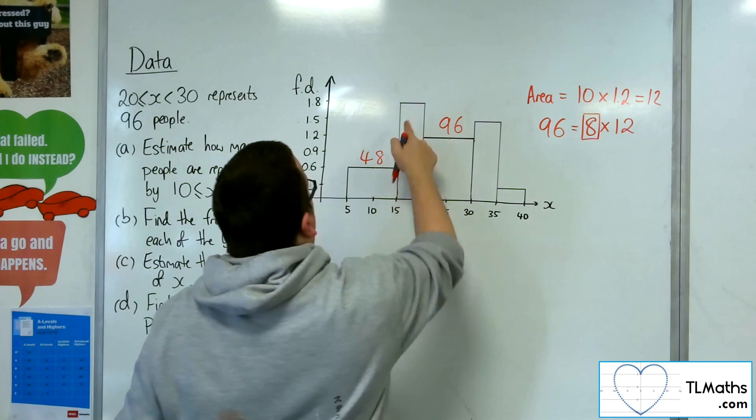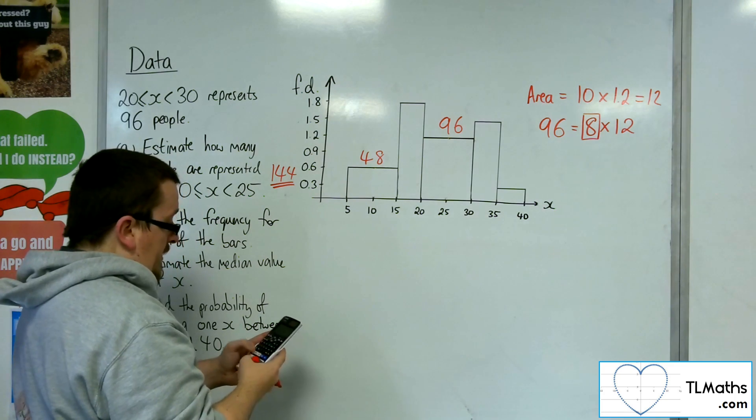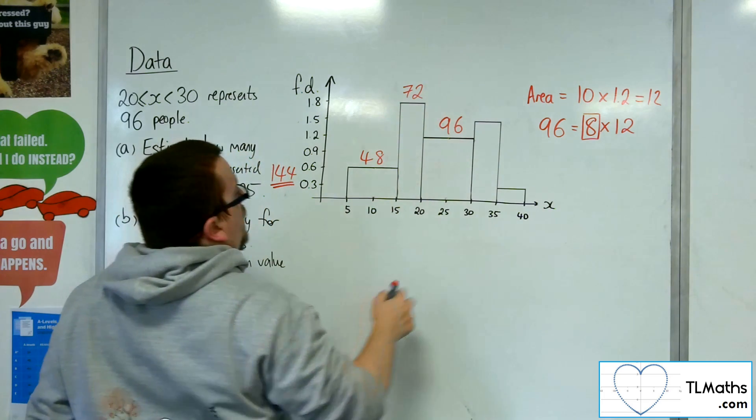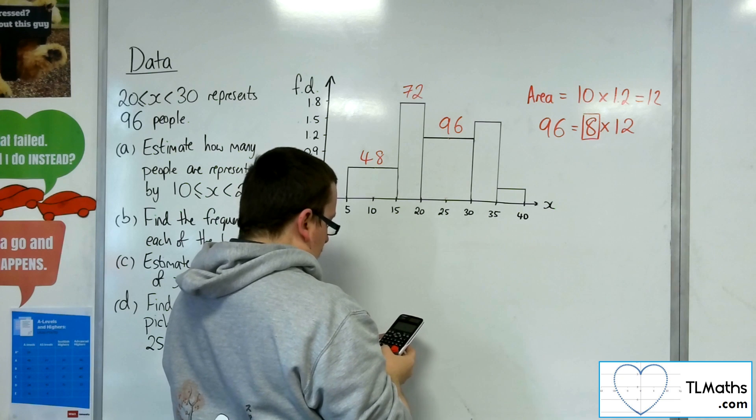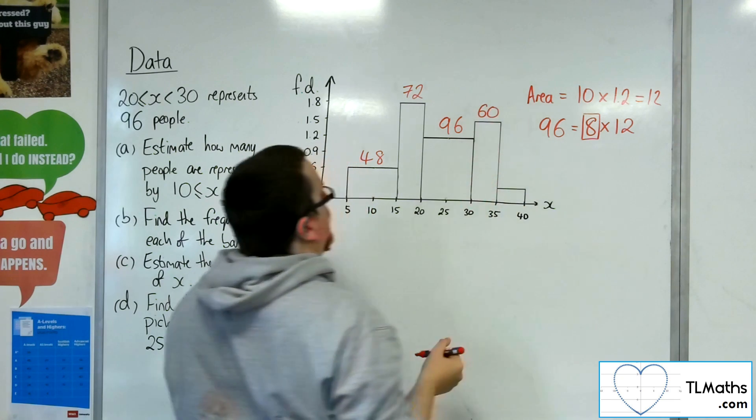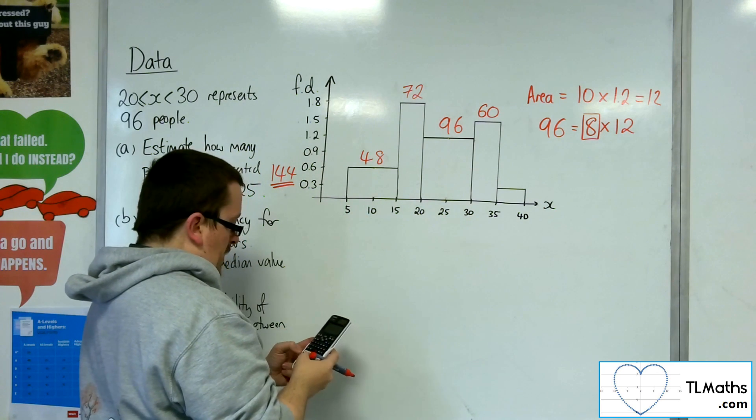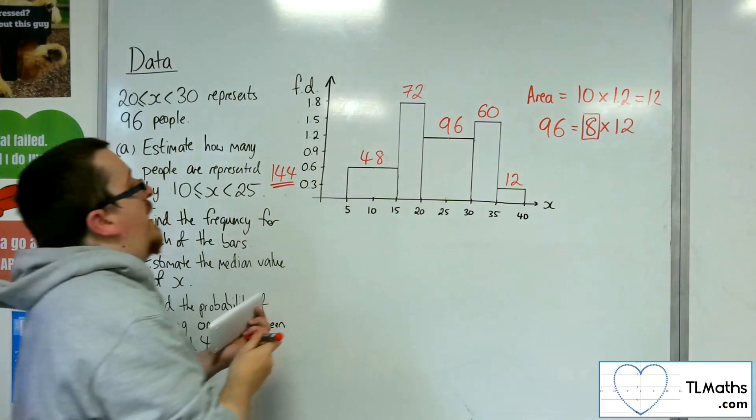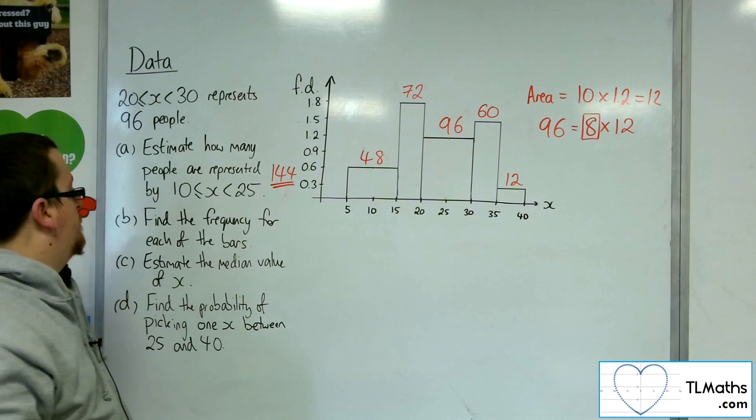This one, I've got 5 times 1.8, and then times that by 8, so 72. This one, I've got 5 times 1.5, and then times that by 8, and that gets me to 60. And this little one, I've got 5 times 0.3, and then times that by 8, and that gets me 12. So that is the frequency for each of the bars, as required.